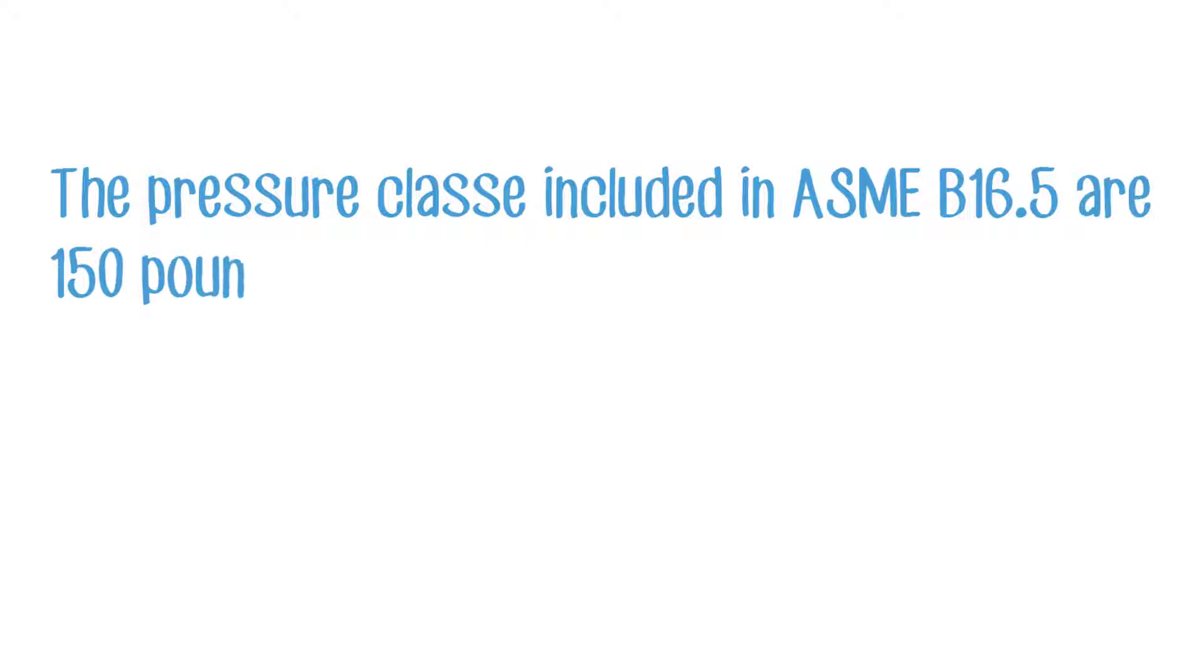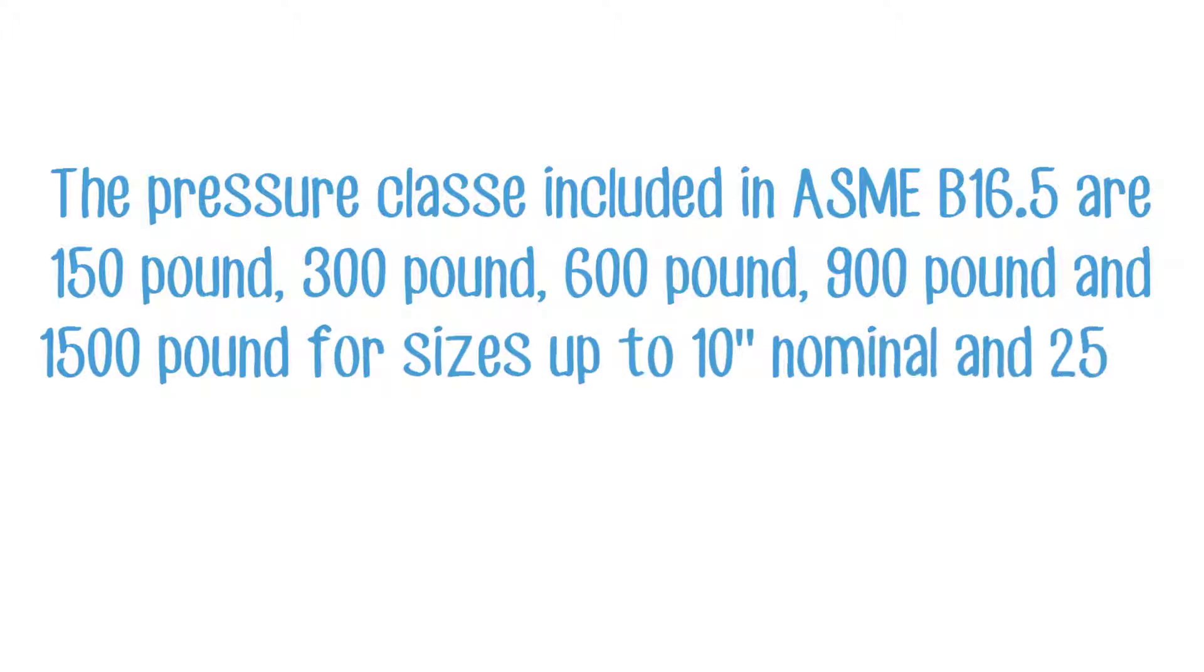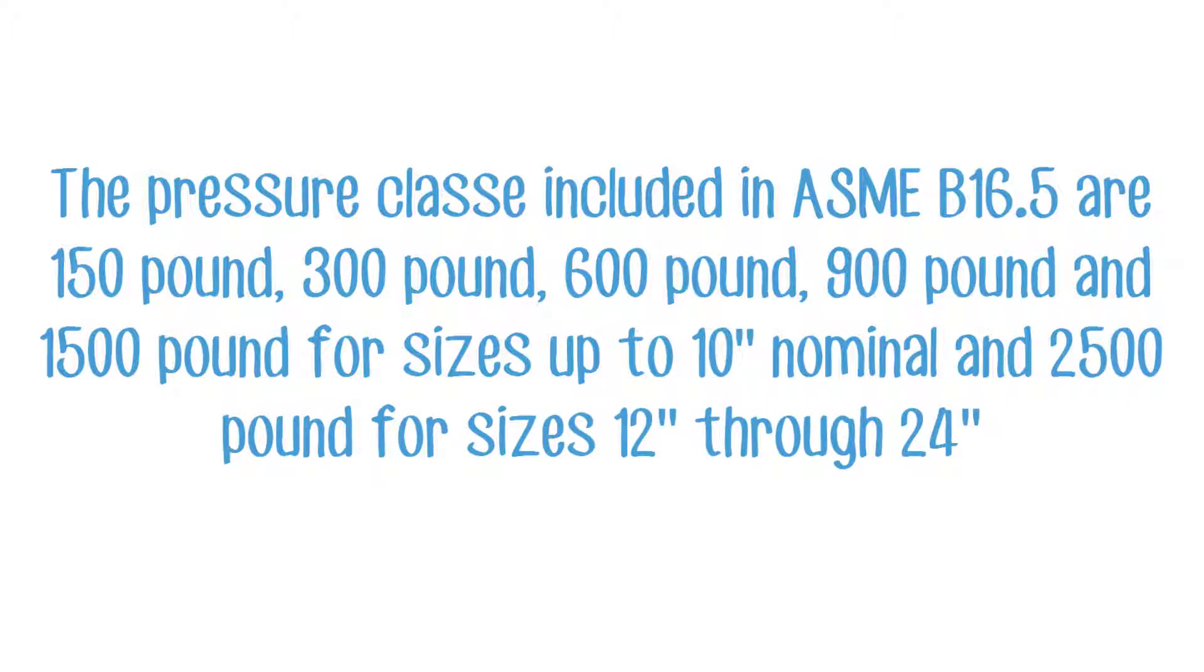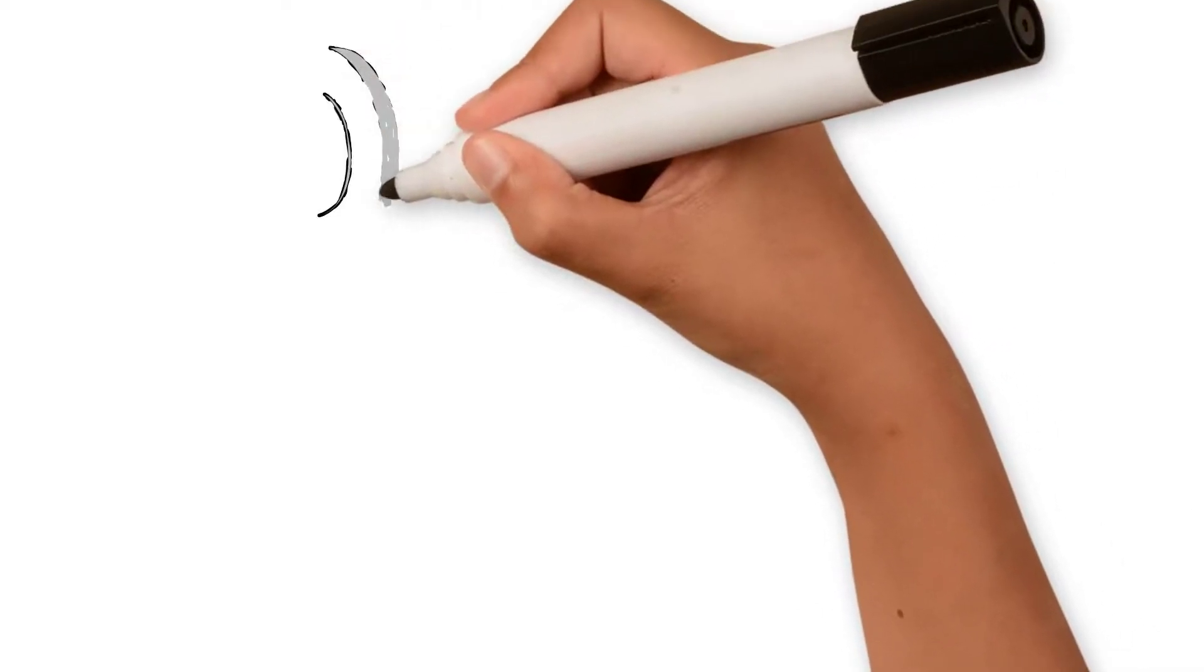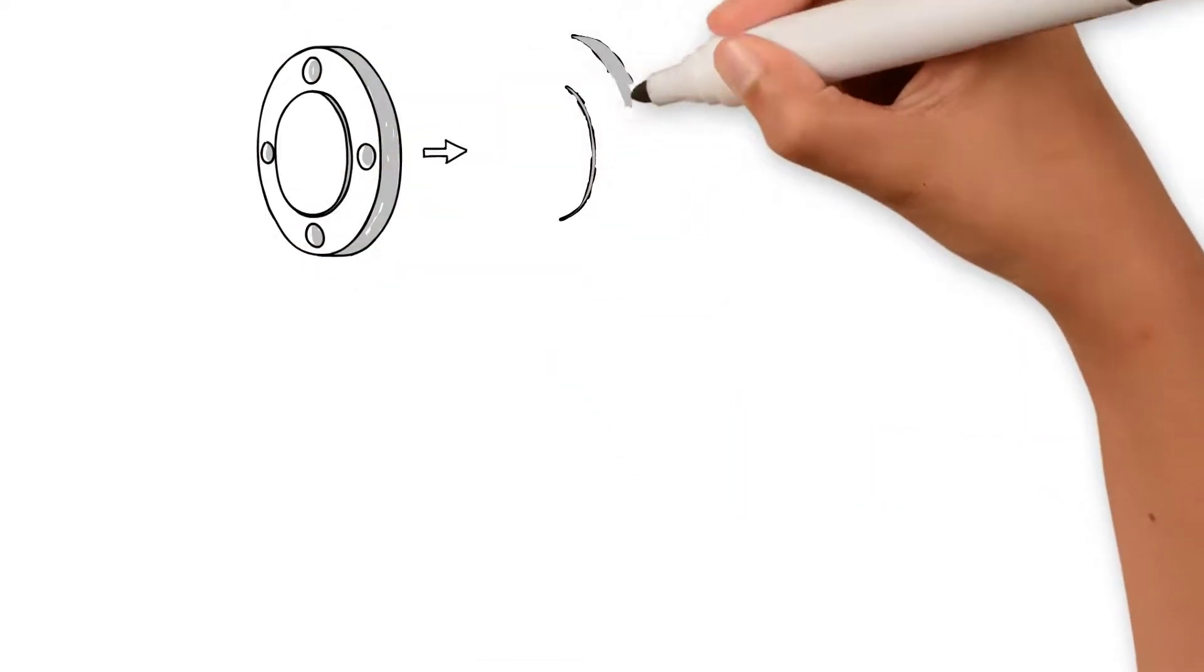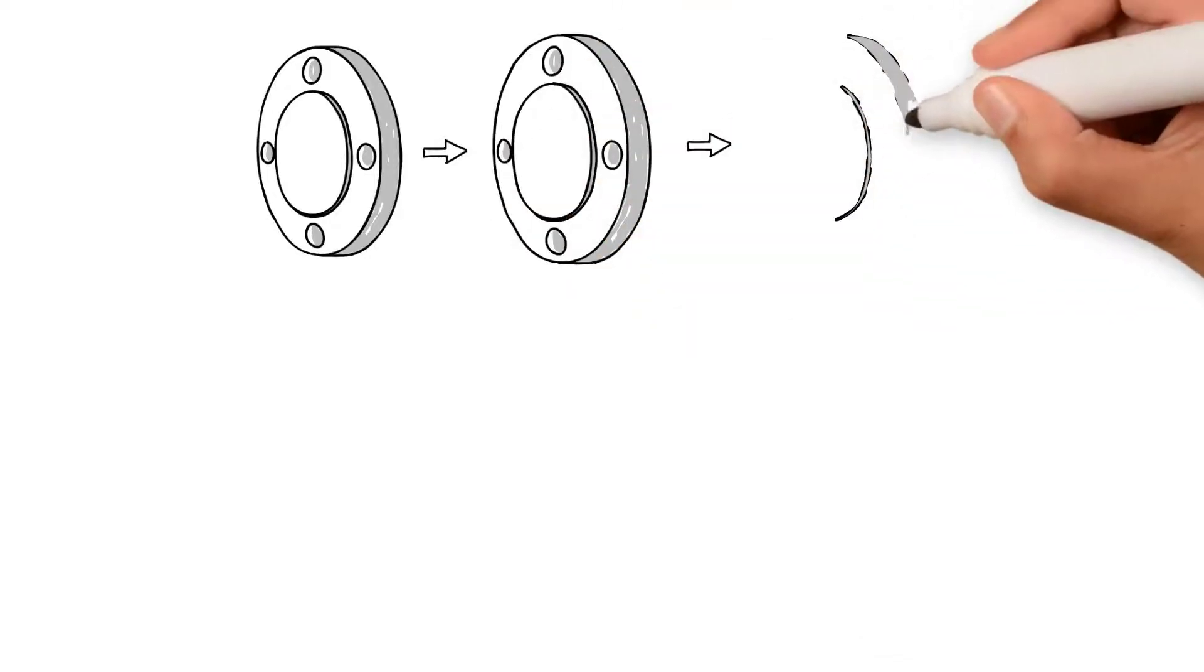The pressure classes included in ASME B16.5 are 150-pound, 300-pound, 600-pound, 900-pound, and 1500-pound for sizes up to 10-inches nominal and 2500-pound for sizes 12-inch through 24-inch. ASME B16.5 is the most common flange standard used in the industry and often just referred to as ANSI flange.